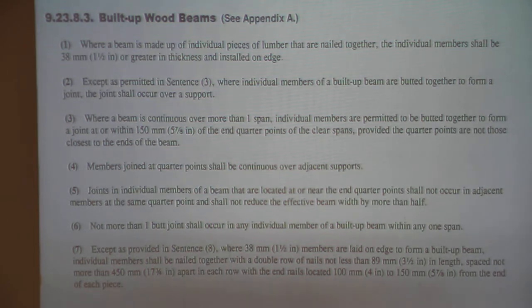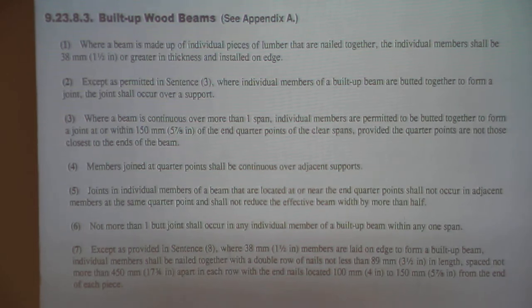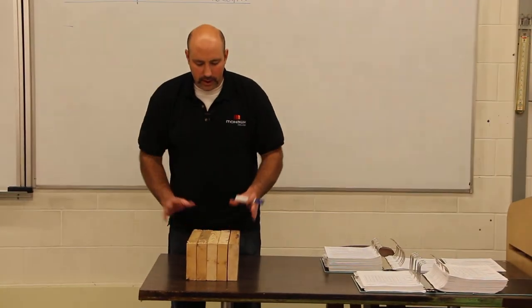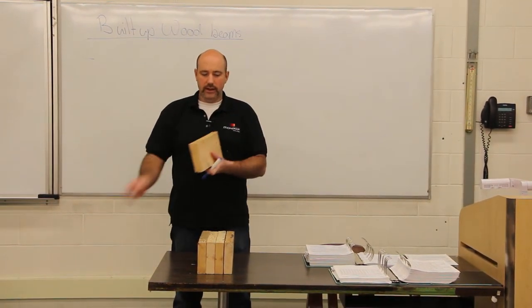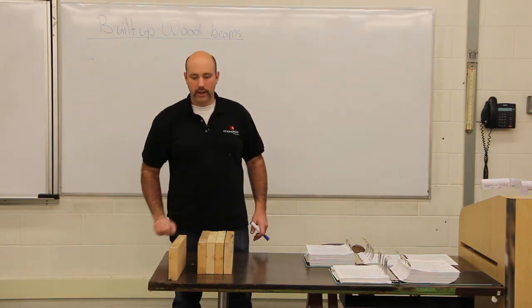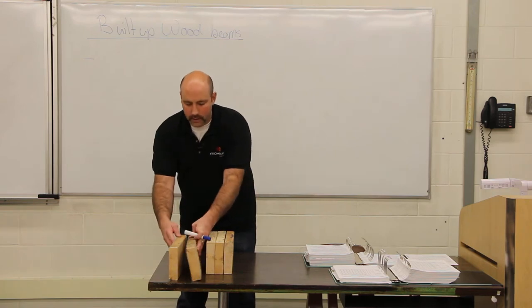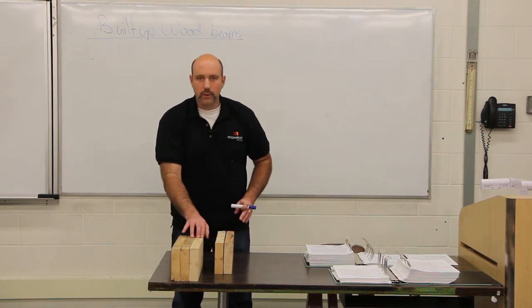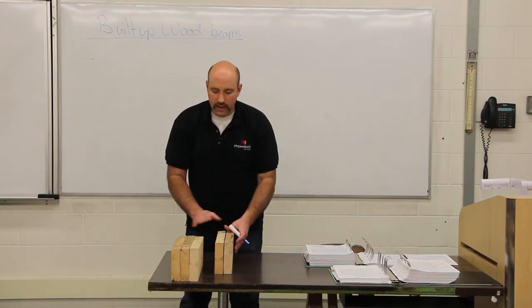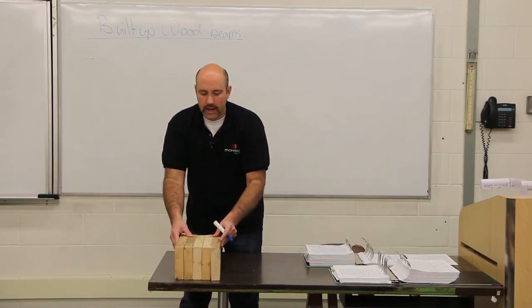Sentence number one: where a beam is made up of individual pieces of lumber that are nailed together, the individual members shall be an inch and a half or greater in thickness and installed on edge. So let's come back to our built-up wood beam on the desk here. Here we have a built-up wood beam. Each piece of material is an inch and a half thick and when I put it on it's going to be put on its edge. One, not a beam. Two, still not a beam. Three pieces, we've got ourselves a beam. Three individual pieces, each of them an inch and a half thick and installed on the edge, four ply and five ply.